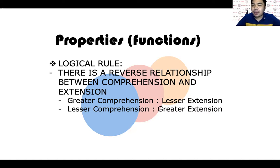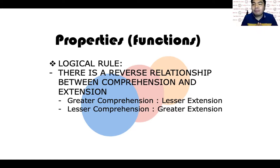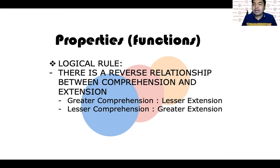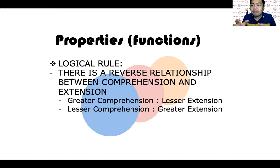Another example: religion and Islam. When we say 'religion,' it is the common noun — it is more general. But when we say 'Islam,' it is the specific or proper noun, a type of religion. So for 'religion,' there is lesser comprehension but greater extension — more examples like Hinduism, Buddhism, Christianity. But Islam, being a more specific noun, has lesser extension. It has greater comprehension because you can give many descriptions for Islam — for example, it is a religion founded by Muhammad — making it more specific and detailed.